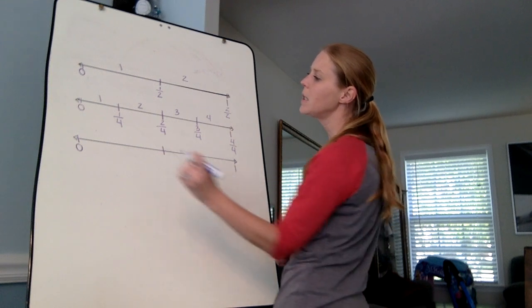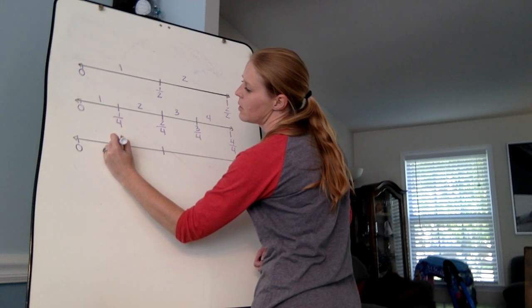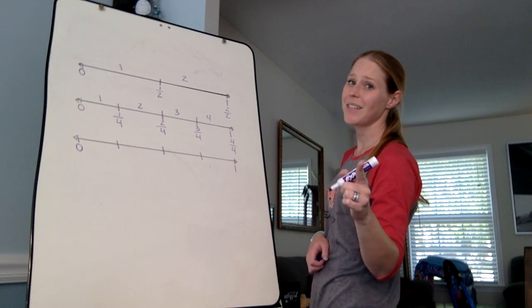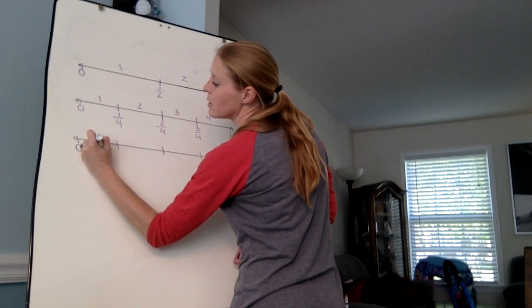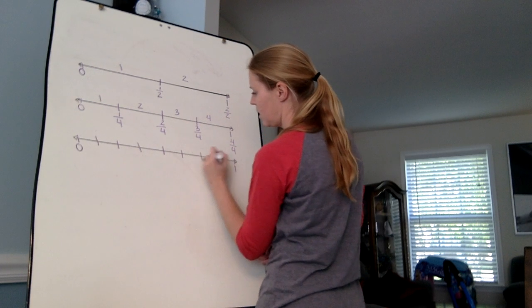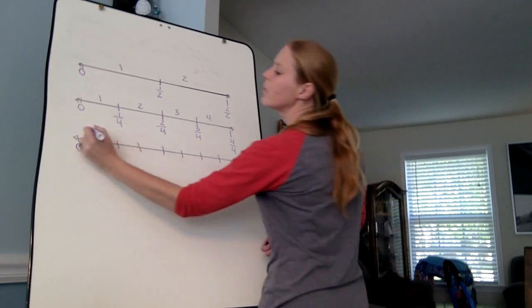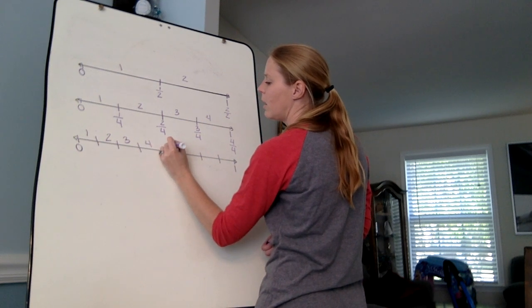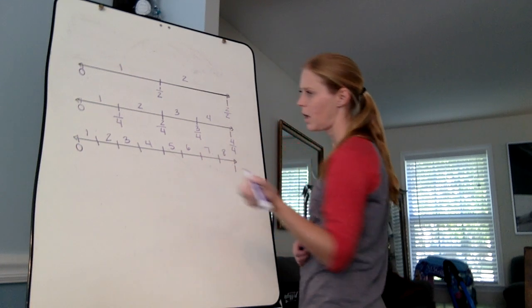So I'm going to kind of take what I've done from my fourths and line these guys up too. So now I know I have four equal size pieces, and I can split those pieces now in half. So here's this, this, here, and here. So now I have one, two, three, four, five, six, seven, eight equal size pieces.